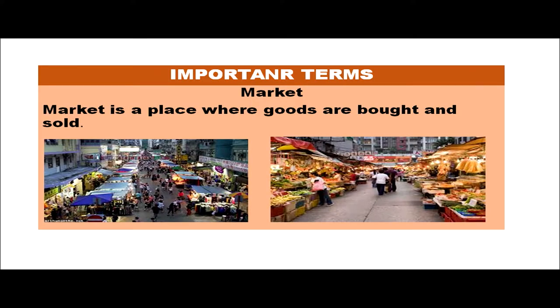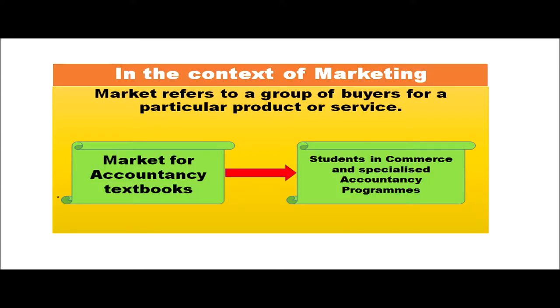Let us see the important terms of marketing. The first term is market. In commerce, market is a place where goods and services are bought and sold. But in the context of marketing, market refers to a group of buyers for a particular product or service.